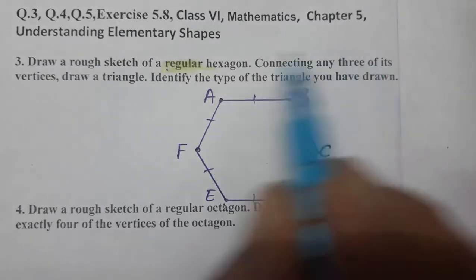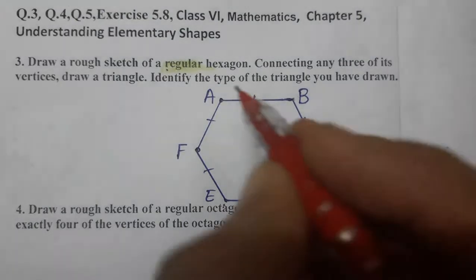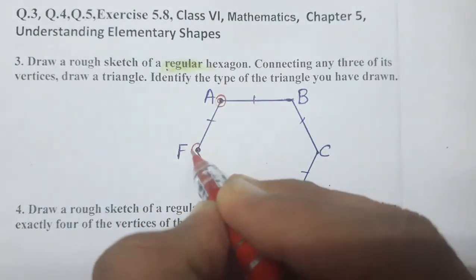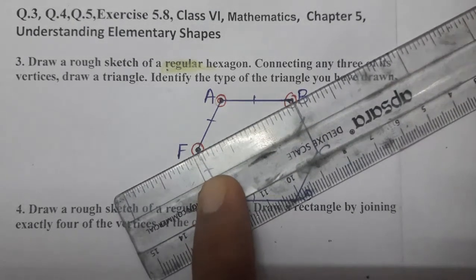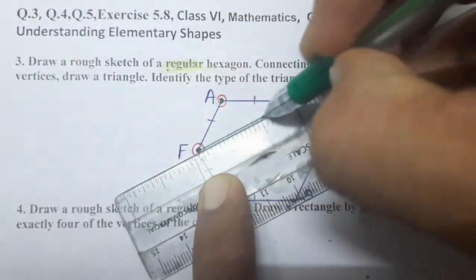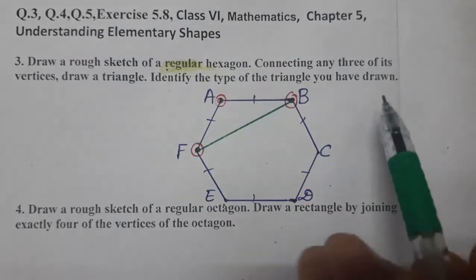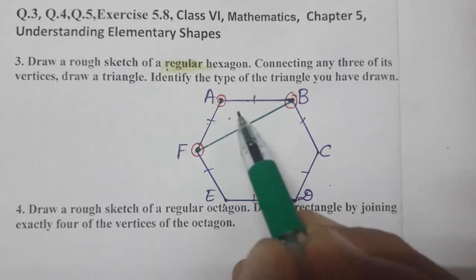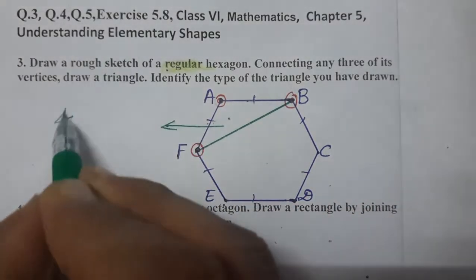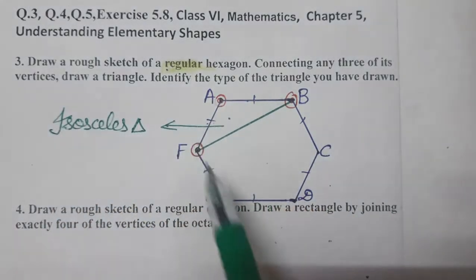Now, connecting any three of its vertices — we have to connect any three vertices. Let's connect A, F and B. Joining B and F, we have joined these three vertices. Now identify the type of triangle drawn. Since two of its sides are equal, this is an isosceles triangle. This completes this question.